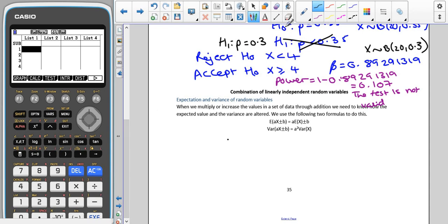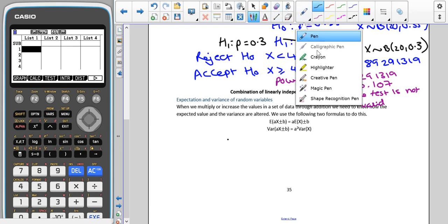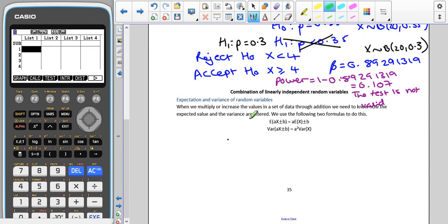When we multiply or increase the value in a set of data through addition, we need to know how this is going to change the expected value and the variance. What I'm saying is that it must happen to all the pieces of data in the same way, so all of the values must be multiplied or all increased by the same amount for this rule to work.